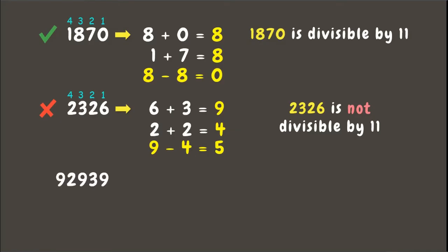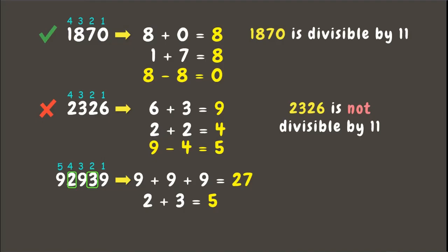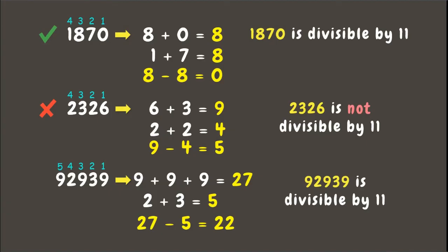Now let's go to our last example, which is 92939. Let's label the digits first. Now let's get the sum of the odd position digits, which are 9 plus 9 plus 9, which equals 27. Next, let's add the even position digits, which are 2 and 3, which equals 5. Finally, let's subtract the sums: 27 minus 5, which equals 22. Since 22 is a multiple of 11, we can say that 92939 is divisible by 11.